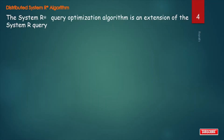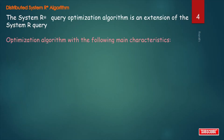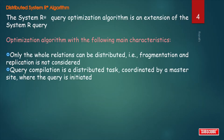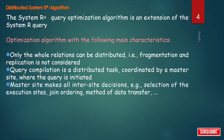The system R star query optimization algorithm is an extension of the system R query optimization algorithm, so first learn that video then learn this one. The query optimization algorithm has some main characteristics. Only whole relations can be distributed — fragmentation and replications are not allowed. Query compilation is a distributed task, coordinated by a master site where the query is initiated.